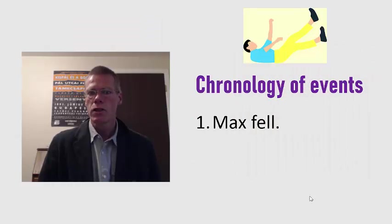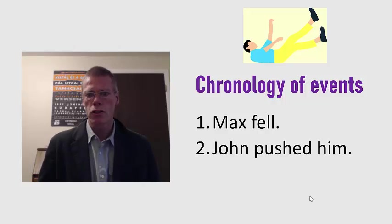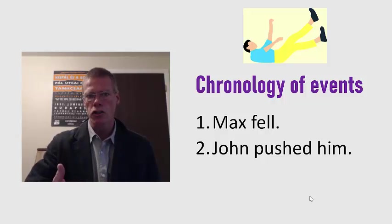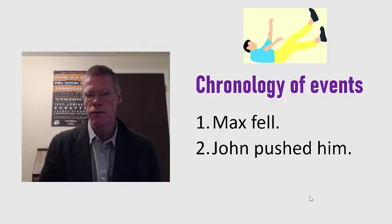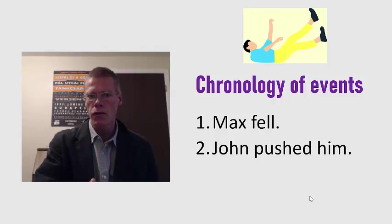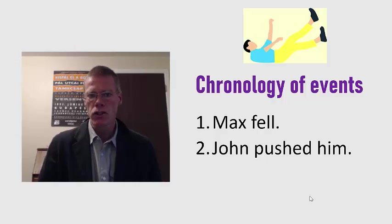On the other hand, if we start with that same sentence, 'Max fell,' but follow it up with 'John pushed him,' that changes our understanding of the events. In the previous one, the idea was that events happened in chronological order. Now we have to understand these events as happening in counter-chronological order — Max fell because John pushed him. This is a cause-and-effect relationship, whereas in the previous one it was a narration: one event happened and then another. Now we're explaining why Max fell. In this one, John is not such a nice guy.